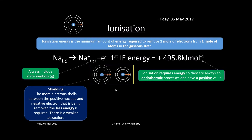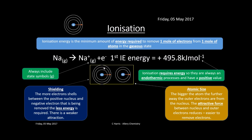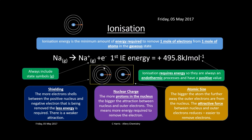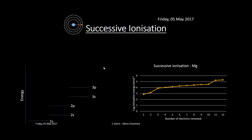Shielding is quite important: the more electron shells between the positive nucleus and the outer electron, the less energy is required to remove it, and the weaker the attraction. Atomic size also plays a role — the bigger the atom, the further the electrons are from the nucleus, so the attractive force is weaker and less energy is needed to remove the outer electron. Nuclear charge matters too: more protons means greater attraction to the outer electron, so more energy is required to remove it.